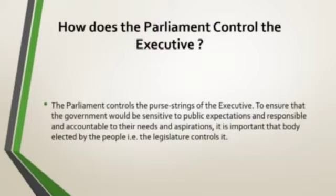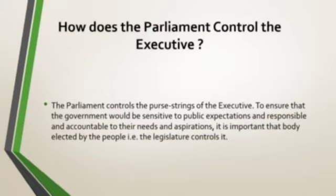How does the Parliament control the executive? The Parliament controls the purse strings of the executive to ensure that the government would be sensitive to public expectations and responsible and accountable to their needs and aspirations. It is important that the body elected by the people, that is the legislature, controls it. If the Parliament is active and vigilant, it can keep a regular and effective check on the executive. The basic foundation of all these controls is the power and freedom of the legislators, as people's representatives, to work effectively and fearlessly.